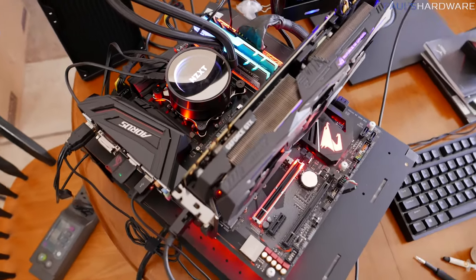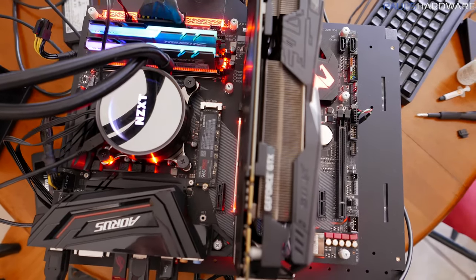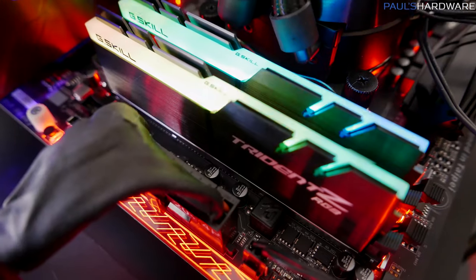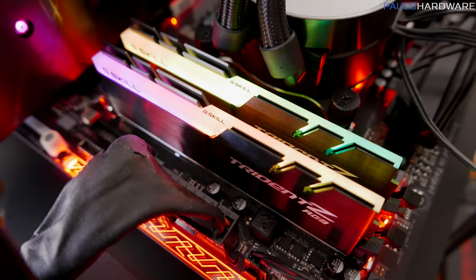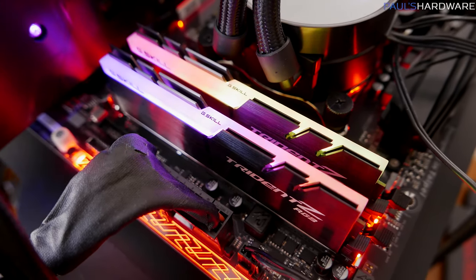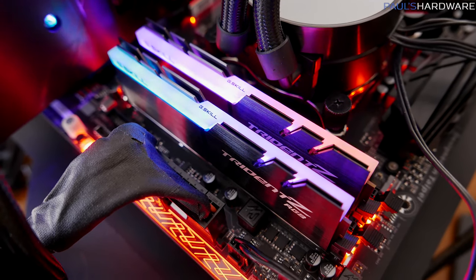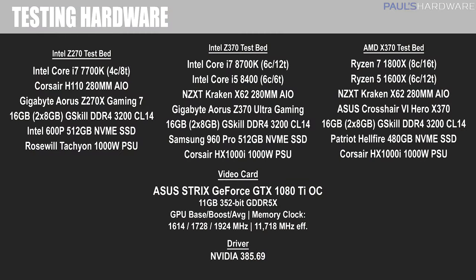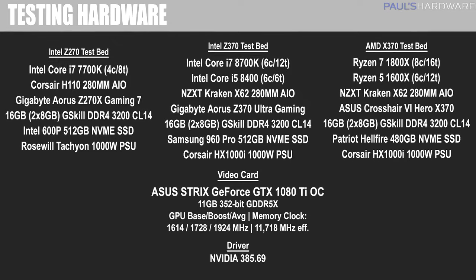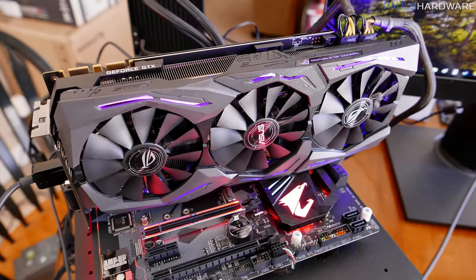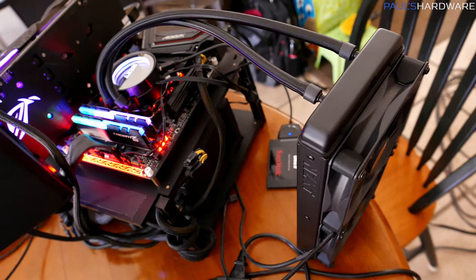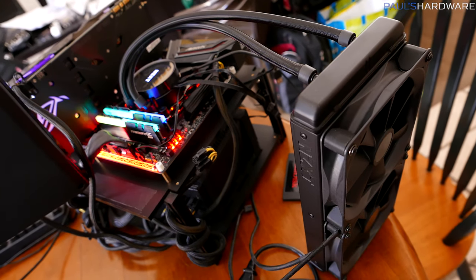For the rest of the testbed, I used the Gigabyte Aorus Z370 Ultra Gaming motherboard, a mid-range board with a reasonable price and a nice feature set. For all memory I'm using G.Skill DDR4 kits in 2x8GB configurations, all running at CAS Latency 14, 14-14-34 timings, at DDR4 3200 speed — giving me the exact same memory configuration across all testbeds. I made sure all BIOS and UEFI were up to date, running the F5 version on the Z370. The GPU for all gaming tests was an ASUS GTX 1080 Ti Strix, and for cooling on both Intel and AMD platforms I'm using the NZXT Kraken X62.